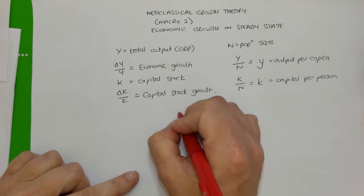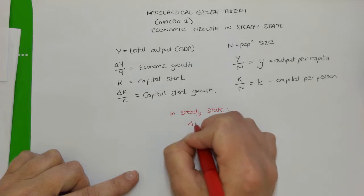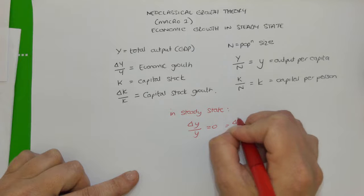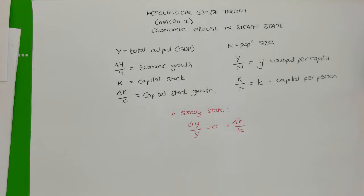What we have learned from that diagram is that in steady state, the change in output per person and the change in capital stock per person are both equal to zero. That's not to say that capital per person and output per person are zero — they're positive values. But once the steady state is reached, there is no further change in output per person and no further change in capital stock per person. Therefore the output per person growth rate and the capital stock per person growth rate are equal to zero.